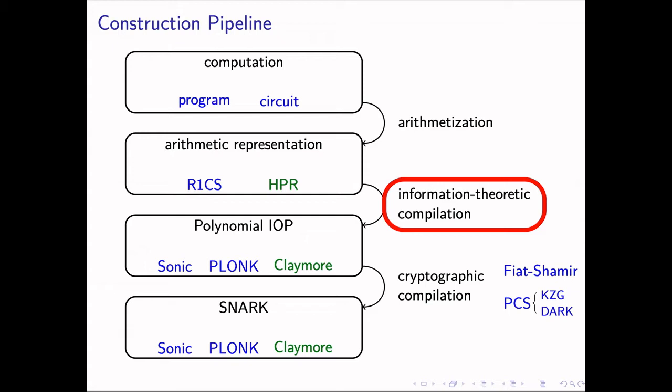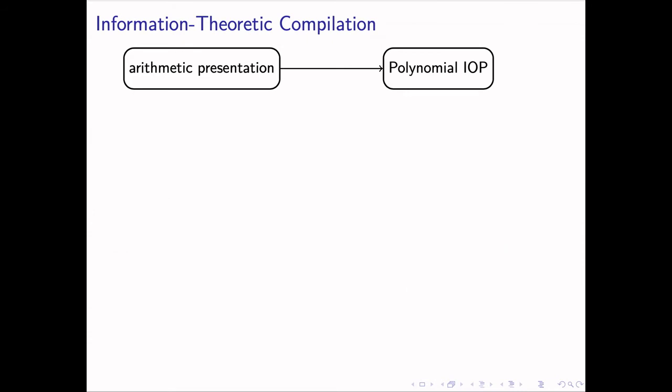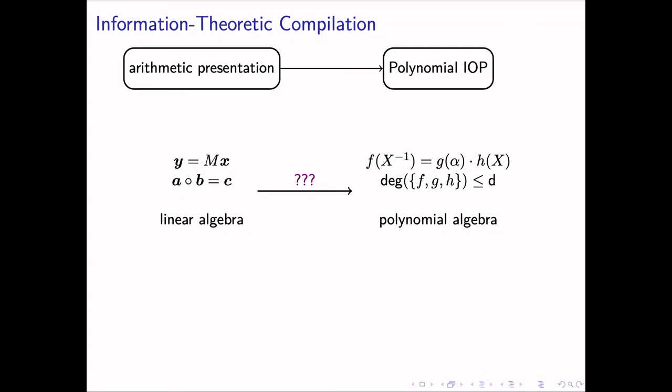In this work, we focus on the second step, information-theoretic compilation. This step transforms an arithmetic representation into a polynomial IOP. The arithmetic representation is typically described by matrices, vectors, and operations in linear algebra. The polynomial IOP, however, provides a different interface. The objects are polynomials, and the operations are evaluations. Therefore, the key questions in designing polynomial IOPs are representing the matrices and vectors by polynomials, and simulating the operations in linear algebra by those of polynomials.